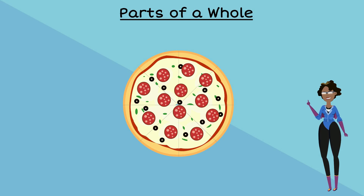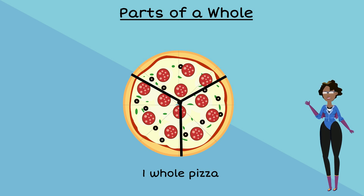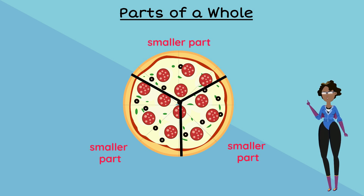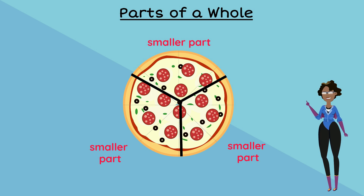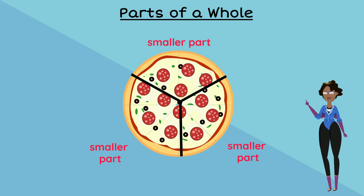We can consider the pizza in its original form to be a whole. Each slice that Raquel cuts is considered to be a smaller part of the whole pizza. These parts could be equal in size or unequal. These parts could be big or small. However, anything less than the whole is still considered to be part of the whole pizza.